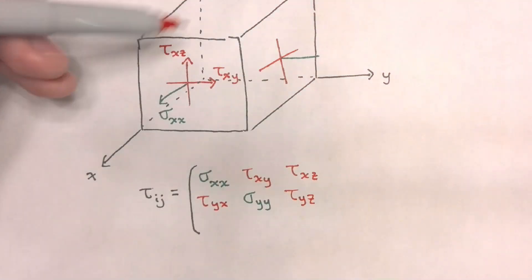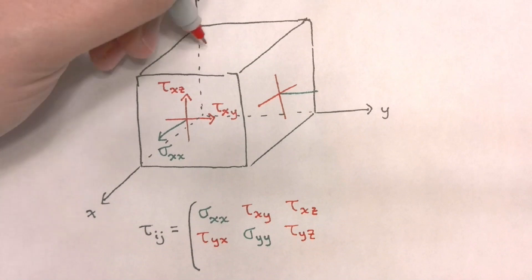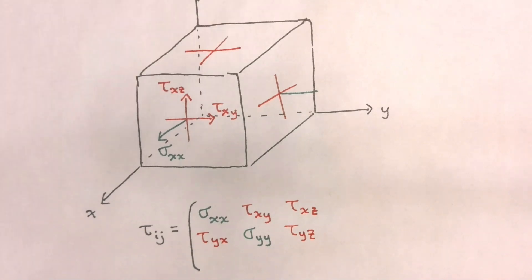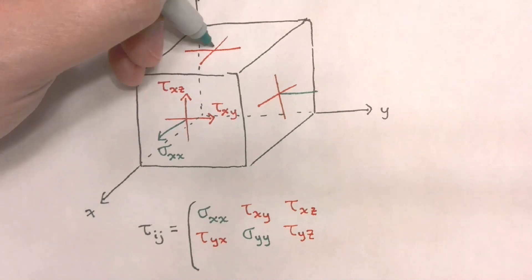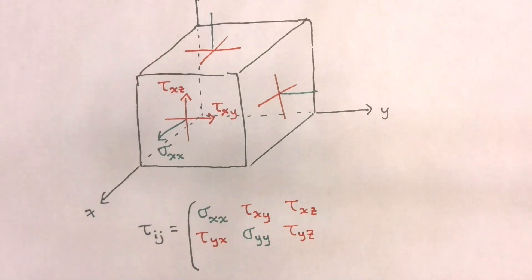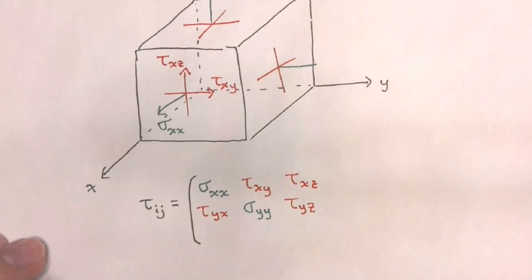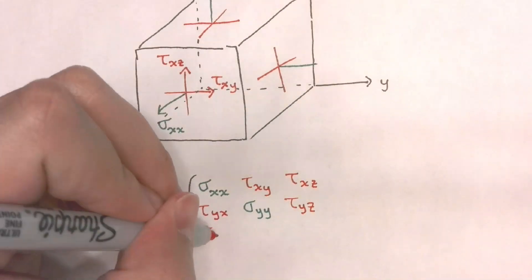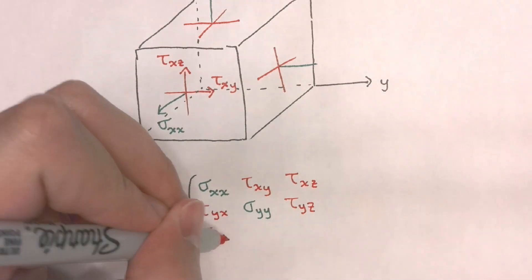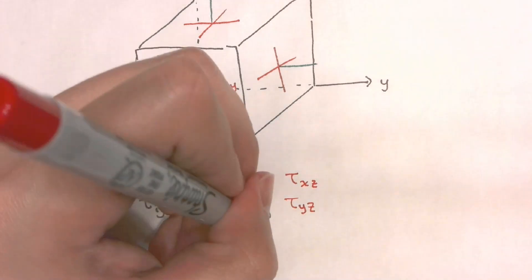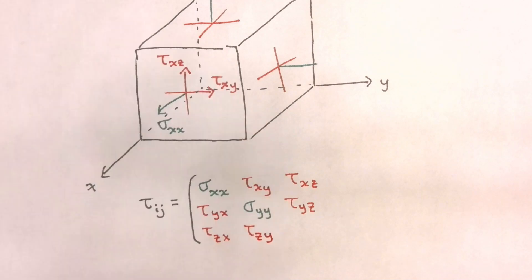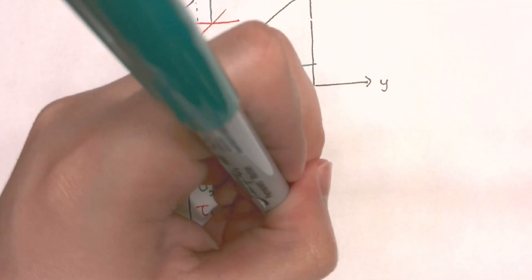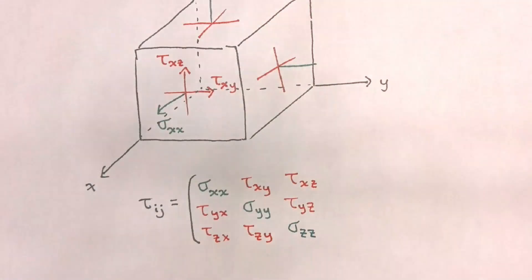When we look at the z-face, we will also have a shear component acting in the x-direction, a shear component acting in the y-direction, and a normal component acting in the z-direction. This gives us a shear component on the z-face in the x-direction, a shear component on the z-face in the y-direction, and a normal component on the z-face in the z-direction.